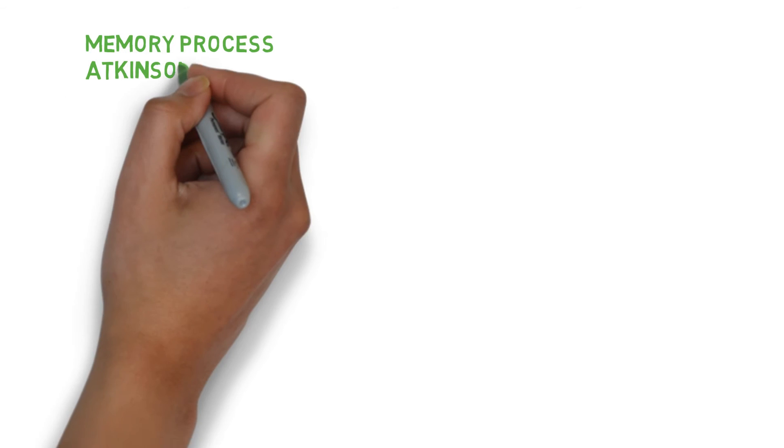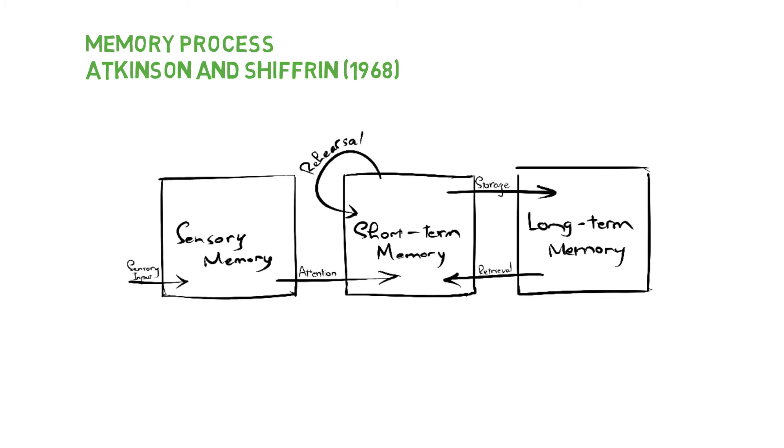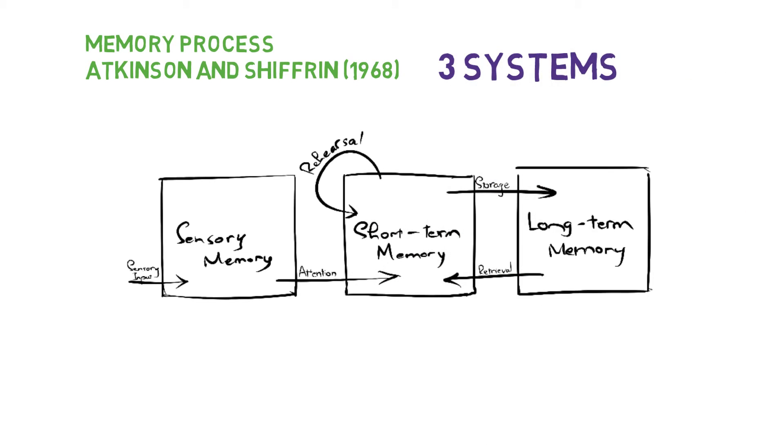Here you can see the memory process proposed by Atkinson and Schifrin in 1968. According to this model, memory storage involves three systems: